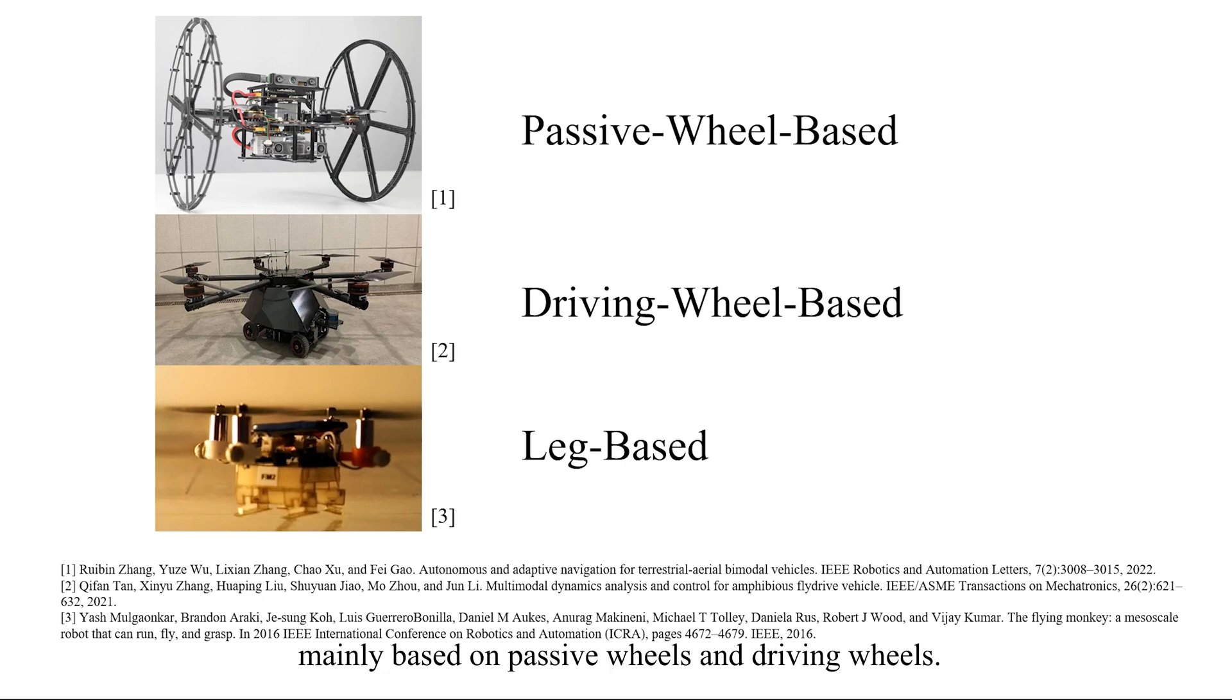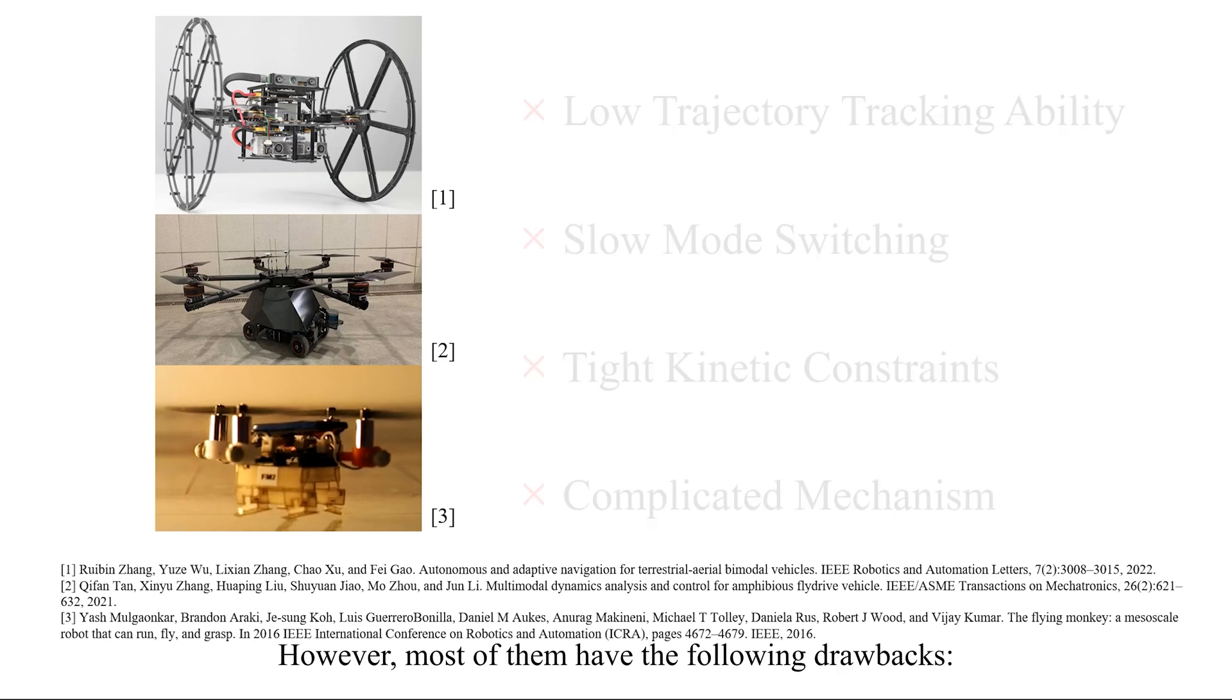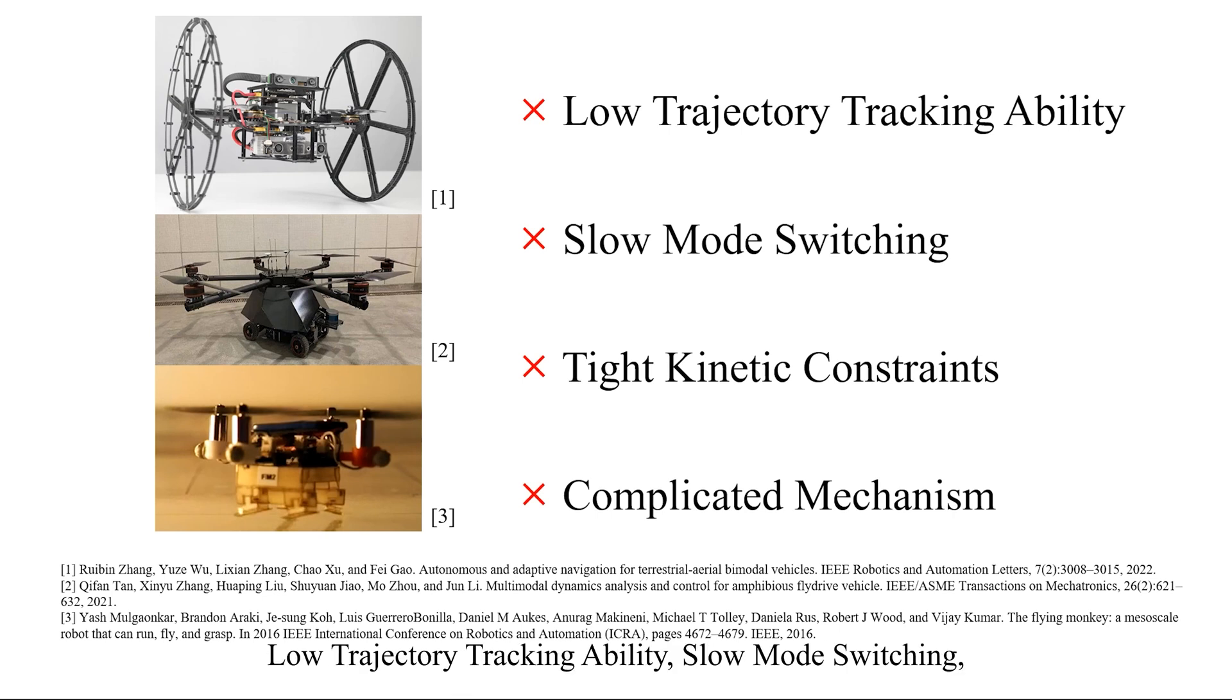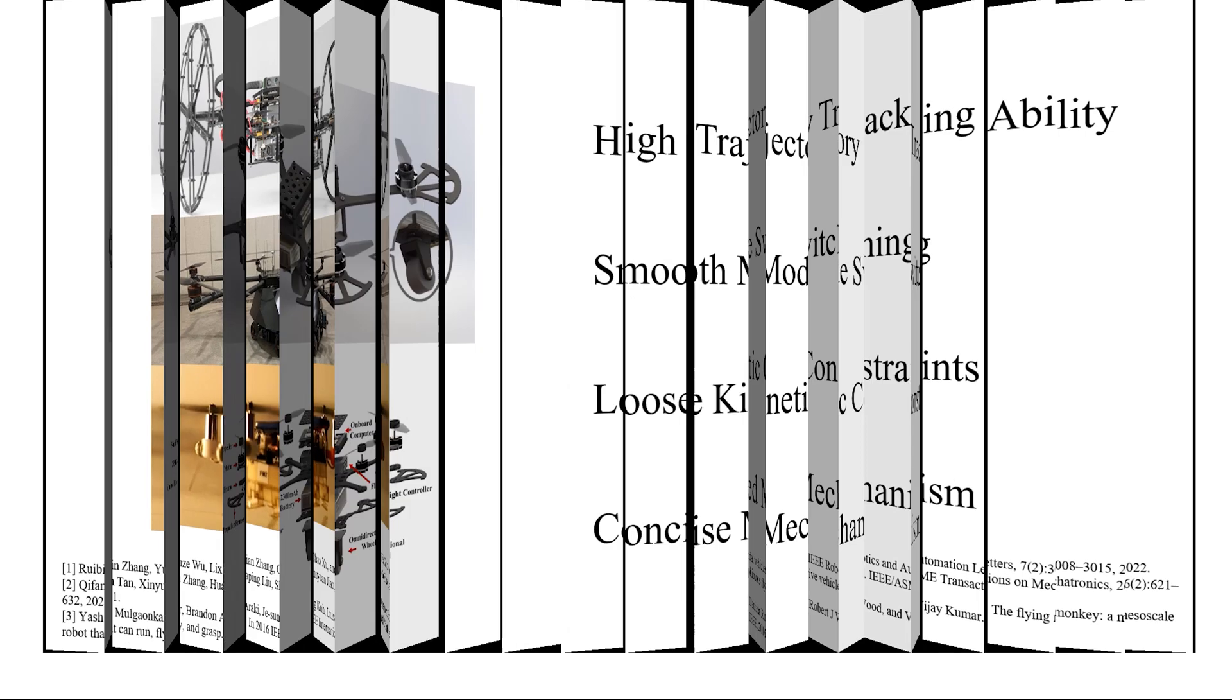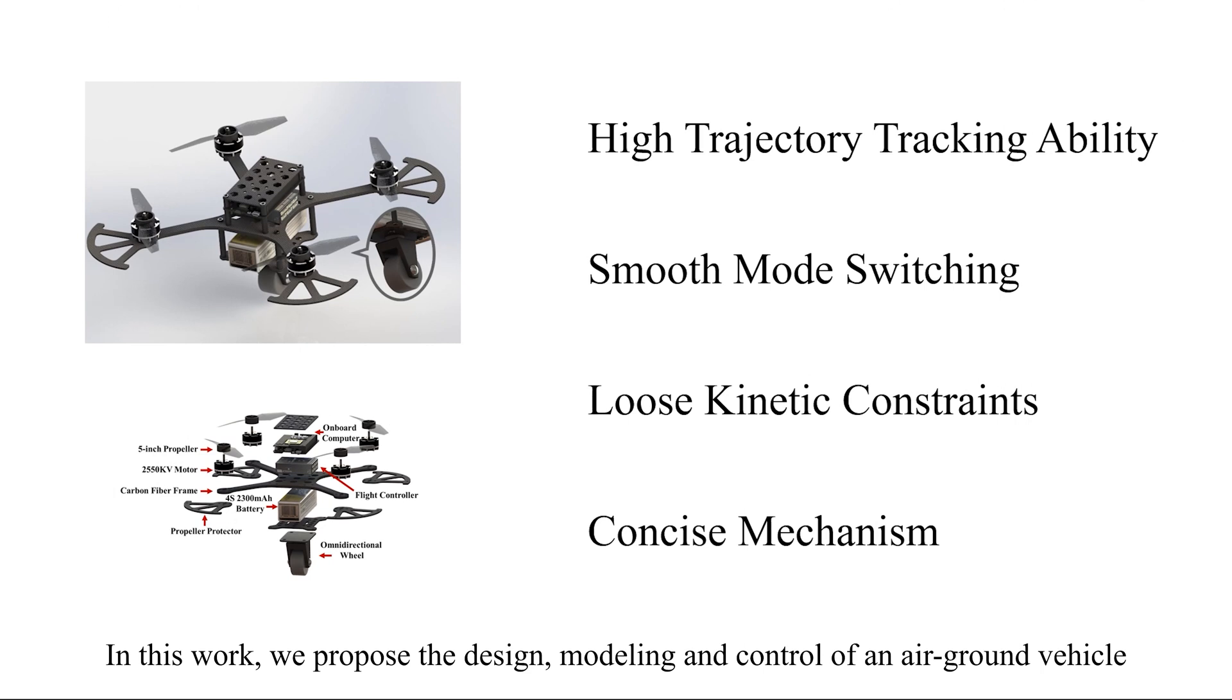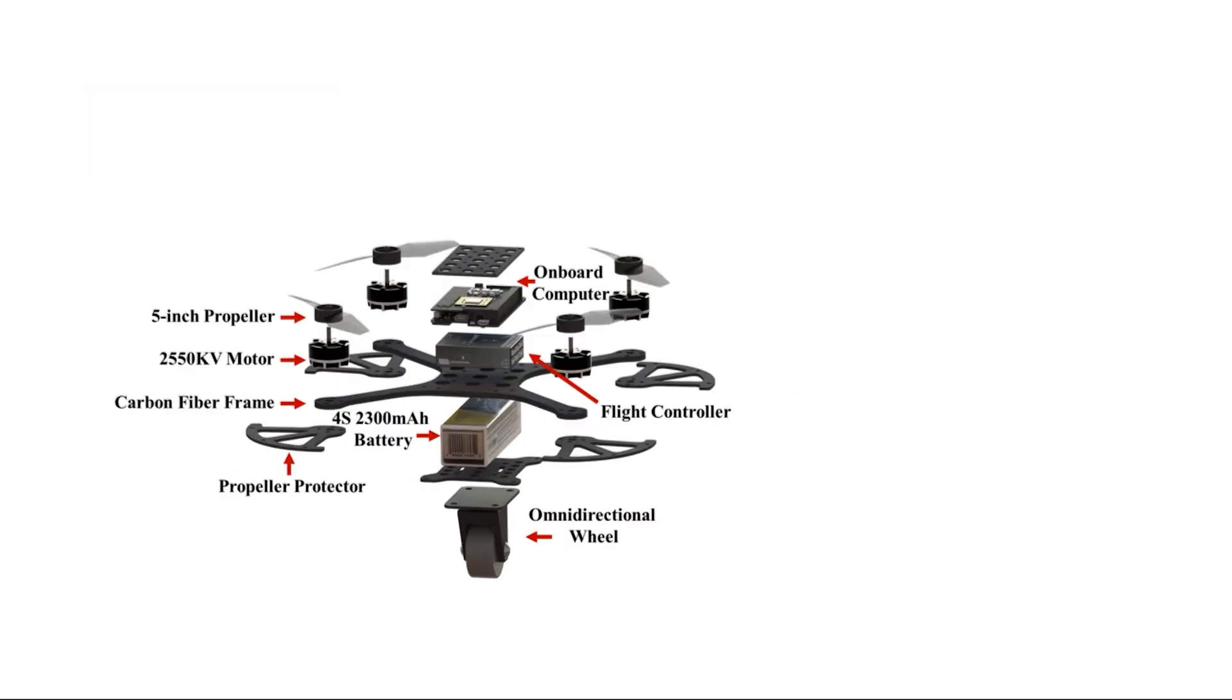Previous researchers have developed numerous configurations of air-ground vehicles, mainly based on passive wheels and driving wheels. Leg-based vehicles also have shown great potential. However, most of them have the following drawbacks: low trajectory tracking ability, slow mode switching, tight kinetic constraints, and complicated mechanism. In this work, we propose the design, modeling, and control of an air-ground vehicle that overcomes these drawbacks.